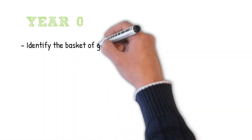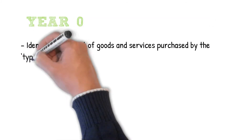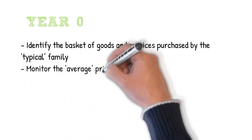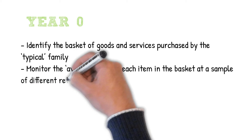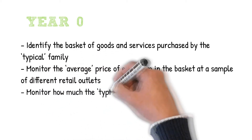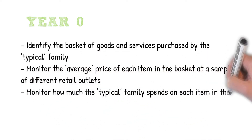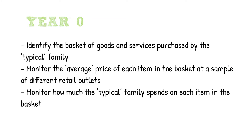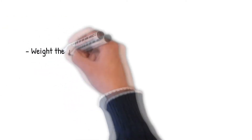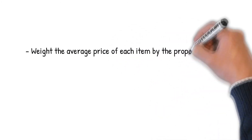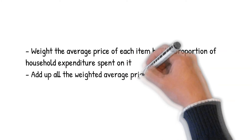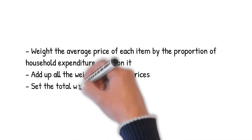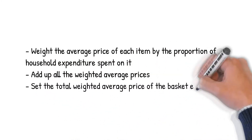In year zero — the base year — we identify the basket of goods and services purchased by the typical family, monitor the average price of each item in the basket at a sample of different retail outlets, and monitor how much the typical family spends on each item. We then weight the average price of each item by the proportion of household expenditure spent on it, add up all the weighted average prices, and set the total weighted average price of the basket equal to 100.